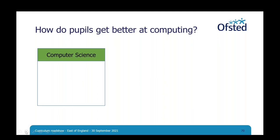The first category, computer science, concerns itself with knowledge of how computers work and knowledge relating to computation. Within that category we might see knowledge of algorithms and programming — knowledge of how sequences of instructions can be implemented on computer systems to solve problems. We might see knowledge of data: the different ways data can enter a computer system, how it might be processed, and knowledge of how it is output. Also knowledge of systems: knowing how different component parts of the computing device work together, and how that computing device might work as part of a larger system such as the internet.